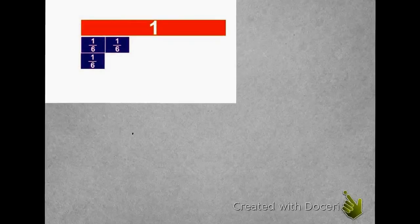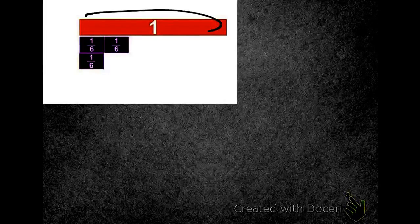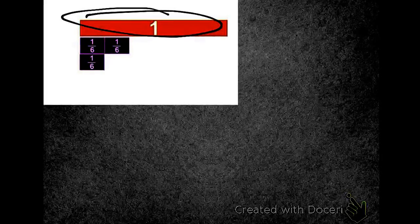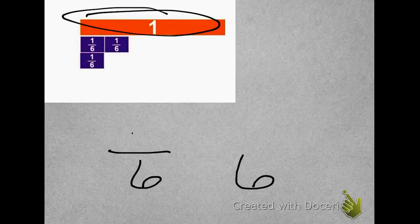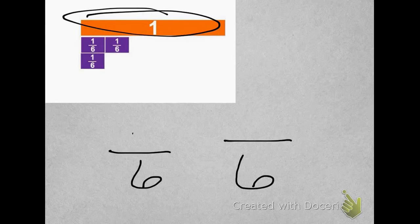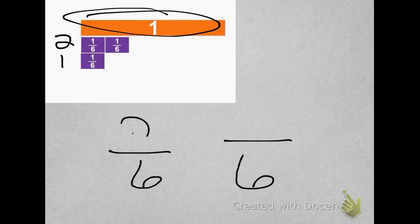Let's compare 2 sixths and 1 sixth. Here's my one whole, and I can see that the denominators are going to be the same because it is divided up into the same equal pieces. That whole was divided up into 6 pieces. Here I have 2 sixths. Here I have 1 sixth. When I look, I can see that 2 sixths is greater than 1 sixth. I can tell just by looking and comparing.